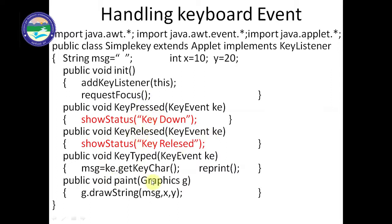In this program we have three different event handling functions: keyPressed, keyReleased, and keyTyped. Just like actionPerformed takes an ActionEvent argument, these functions take a KeyEvent argument — ke is the object of KeyEvent class. We also have a paint function with paint(Graphics g) and g.drawString to display output. On the status bar we show 'key down' and related messages.